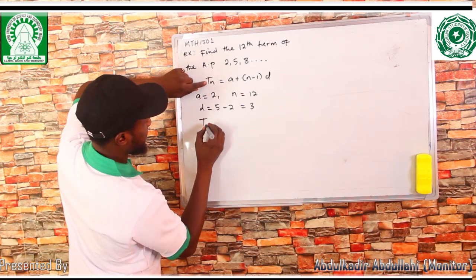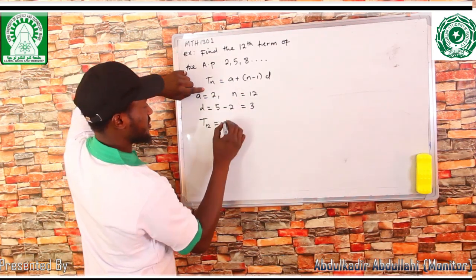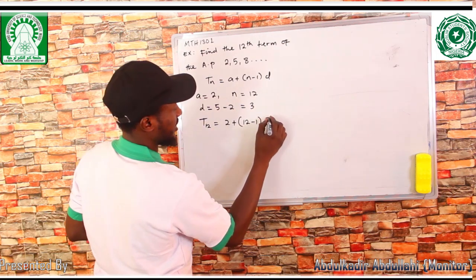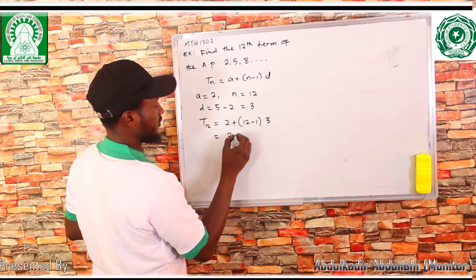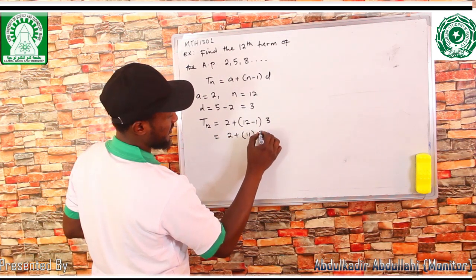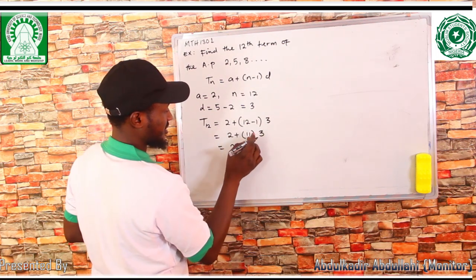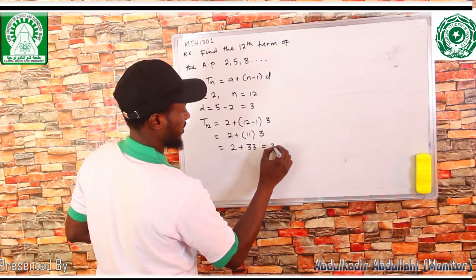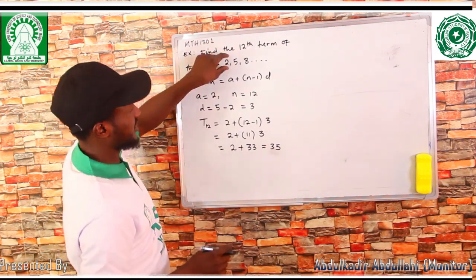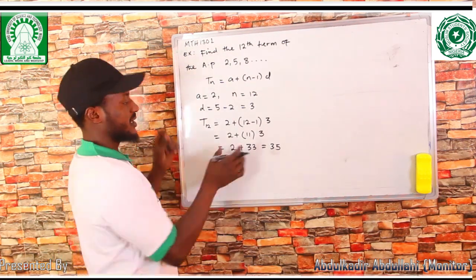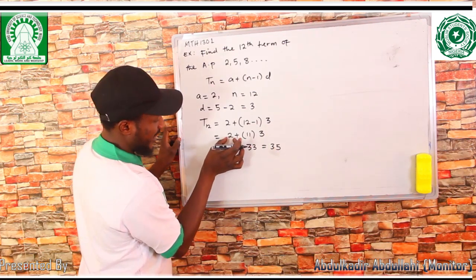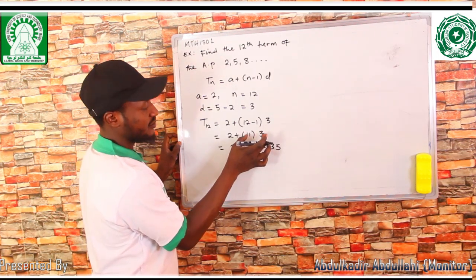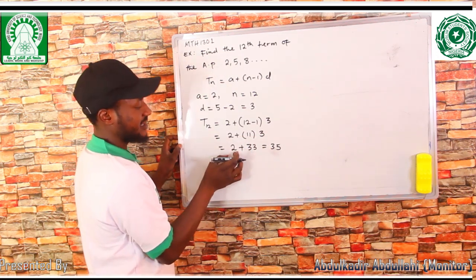The twelfth term, T(12), equals A + (N - 1)D = 2 + (12 - 1) × 3. We open the bracket: 11 × 3 = 33, then 2 + 33 = 35. So 35 is the twelfth term. Note: you cannot add 2 and 11 while 11 is multiplying — you must open the bracket first, multiply, then add.